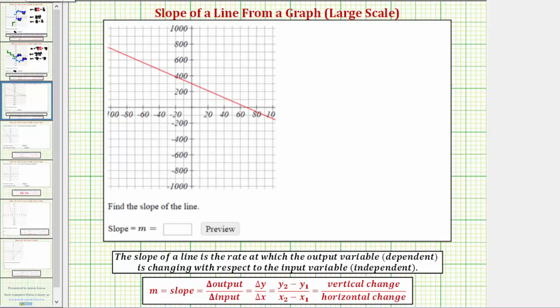So the first step is to find two convenient points on the line, for example, this point, and let's say this point here. Let's go ahead and find the coordinates of these two points, but we need to be careful about the scaling of the axes.